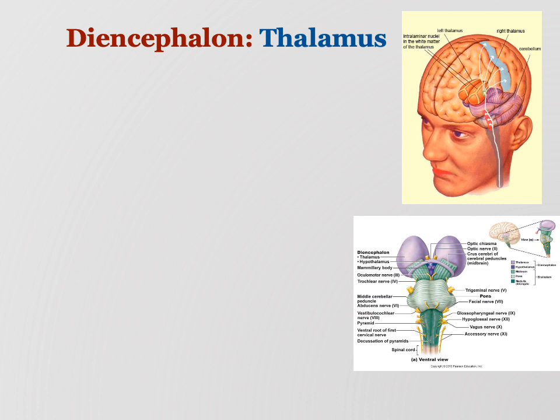Continuing with brain physiology. We had four main functional regions of the brain: the cerebrum, the diencephalon, the brainstem, and the cerebellum. We just finished the brainstem, which was composed of the medulla oblongata, the pons, and the midbrain. So now we're into the diencephalon.